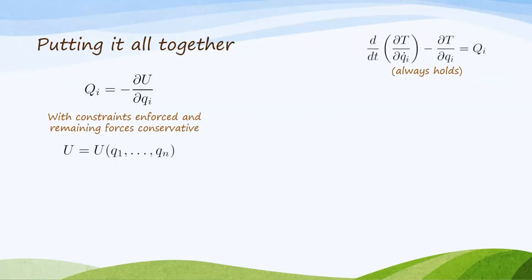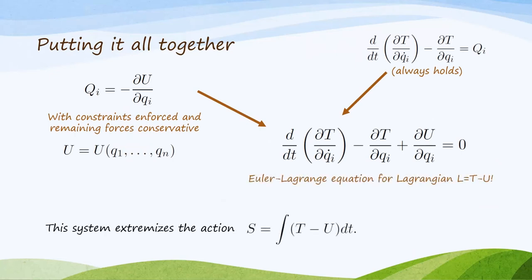So now we're ready to put it all together. If we have chosen coordinates such that all the constraints are enforced, and if the only other forces are conservative forces, where it coming from a potential u equals u of q, then we can take the equation that always holds on the upper right, plug in q equals minus di dq, and now we get an equation that is starting to look an awful lot like the Euler-Lagrange equation. In fact, it is the Euler-Lagrange equation. If you take L equals t minus u, then the right two terms are just dldq. And the left term is also d by dt dldq dot, because du dq dot is zero. So we've derived the Euler-Lagrange equation for the Lagrangian t minus u, and we know that the system extremizes the action s is integral of t minus u dt.